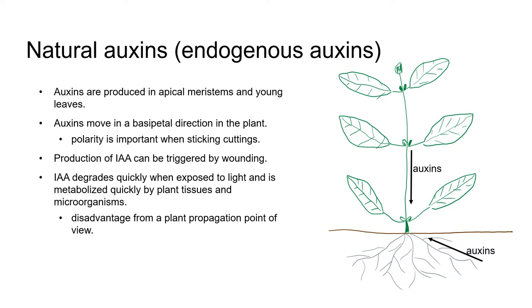The production of IAA by plants can be triggered by wounding, such as the action of us as propagators cutting a stem from a plant. IAA degrades quickly when it's exposed to light, and it's also metabolized quickly by both plant tissues and microorganisms. This lack of longevity can be a problem from a plant propagation point of view, because we want the auxins to be present and active for quite a while in order to initiate adventitious roots. For this reason, naturally occurring IAA isn't used in most commercially available rooting compounds.